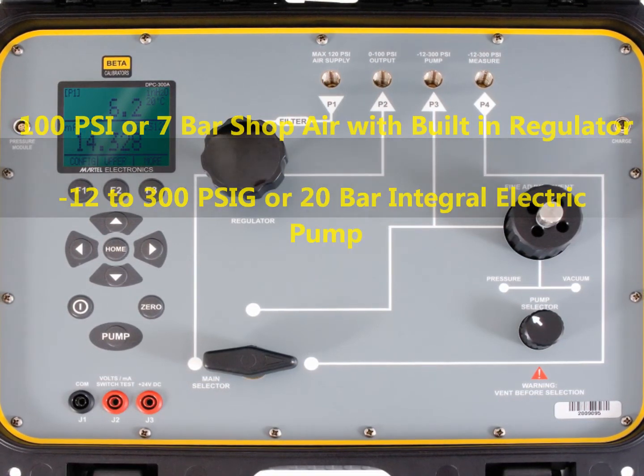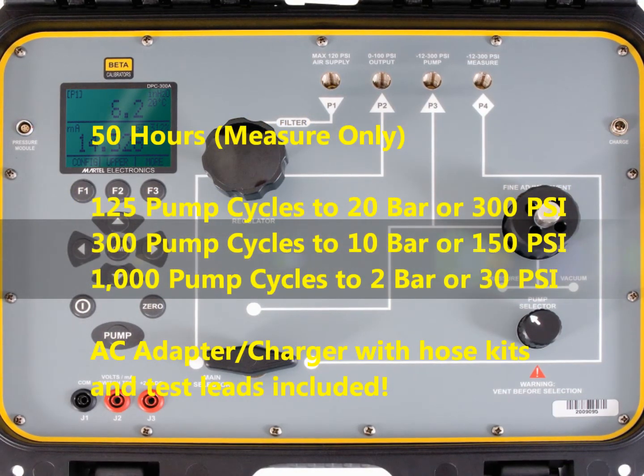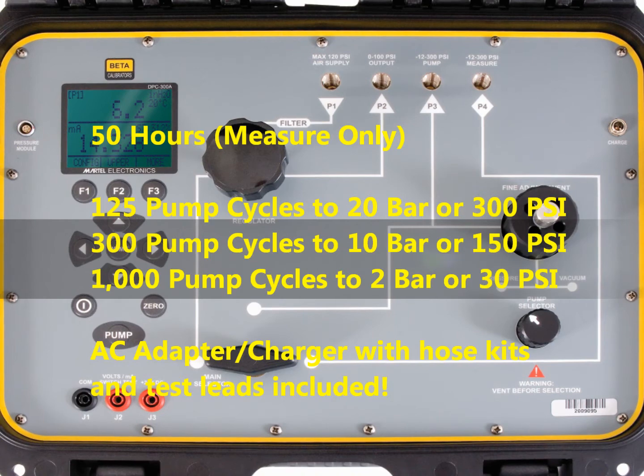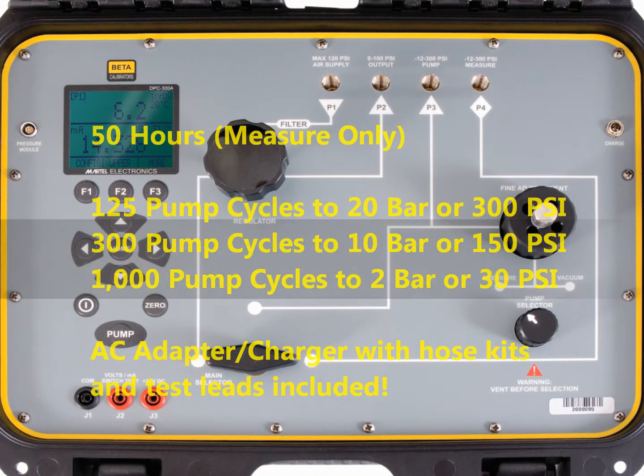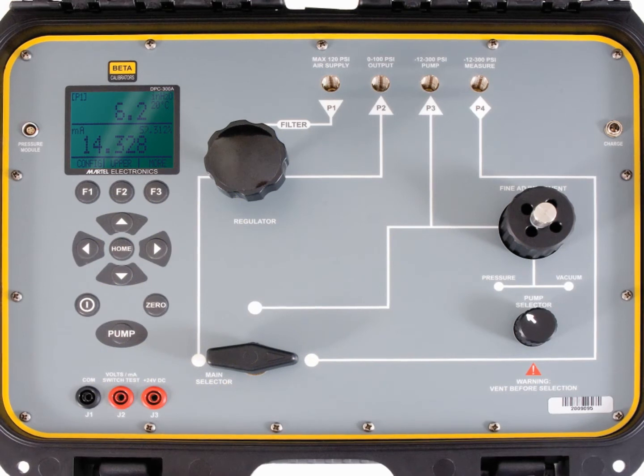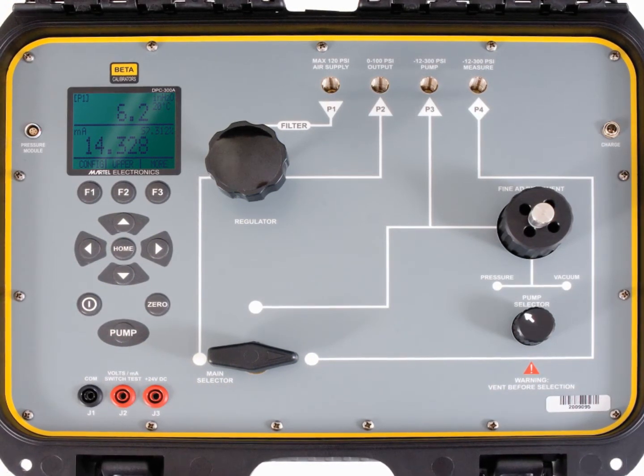The DPC-300A is powered by a 16-volt nickel metal hydride rechargeable battery which provides over 50 hours of continuous use in measure mode. It weighs about 15 pounds and is packaged in a rugged IP67 case that is 15 inches by 7 inches.